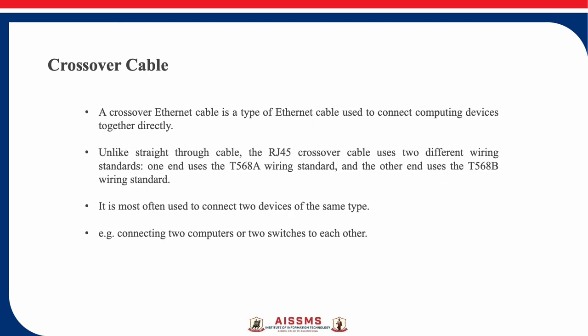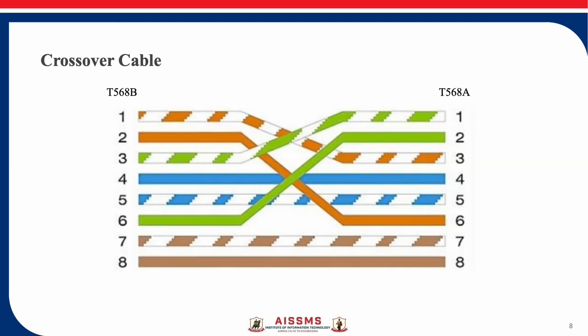Now we'll look at the crossover cable. This cable is also a type of Ethernet cable. Unlike the straight-through cable, it uses two different wiring standards — if one end has T568A, the other will have T568B. This cable is used to connect two devices of the same type, for example connecting two computers or two switches to each other. Let's see the configuration of the crossover cable.